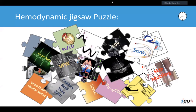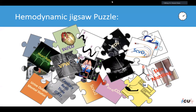This presentation covers challenges encountered during practice in the liver unit in Riyadh, and will illustrate the challenges inside the ICU in assessing hemodynamics and how to go about it.